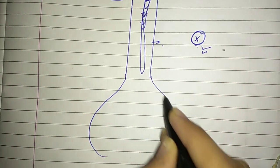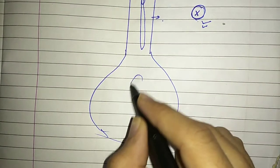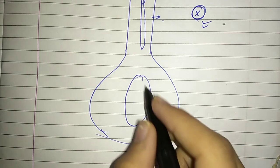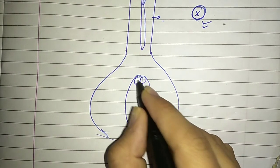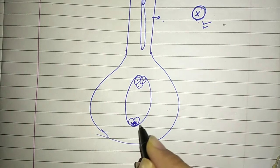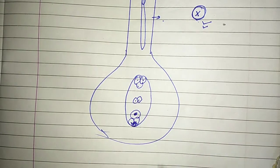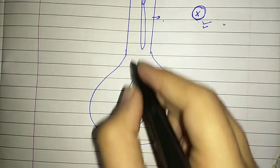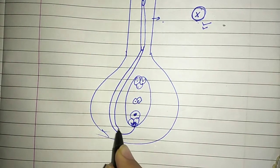Let me draw the embryo sac here. I've drawn the ovary, then ovule, and inside the ovule is the embryo sac. Let me draw the complete embryo sac properly so you can see clearly: antipodal cells, synergids, filiform apparatus, egg cell, and polar nuclei.